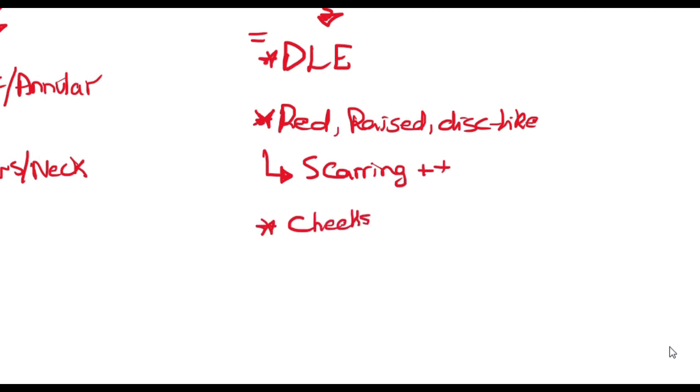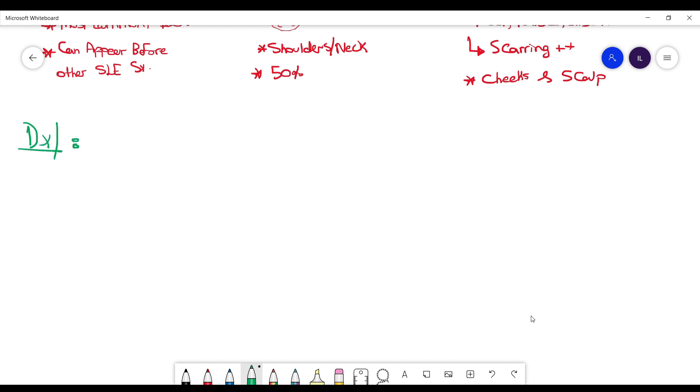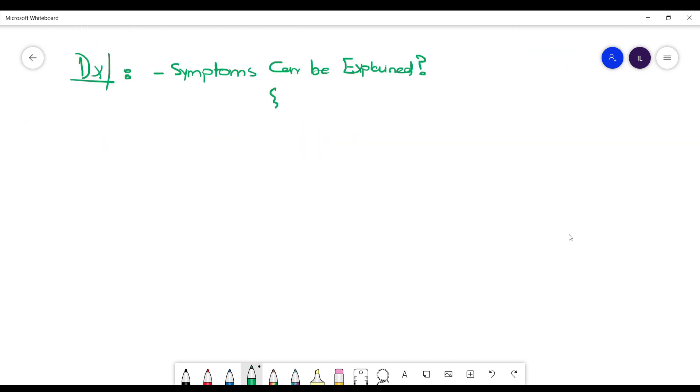Now we need to know how to diagnose. It's a stepwise approach. First question you have to ask yourself: can I explain all the symptoms that the patient is presenting with with any other disease? If the answer is no then you can proceed with the criteria. You need four out of 11 of these clinical manifestations and laboratory manifestations as well.